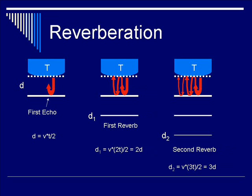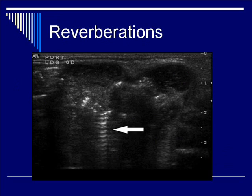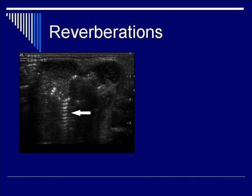Back to the image shown earlier, you can see multiple reverberation bands extending distally from the near field to the far field, as pointed out by the arrow. This phenomenon is due to the reverberation of the ultrasound signal around the metallic object of interest. The bands form the classic example of reverberation artifact.